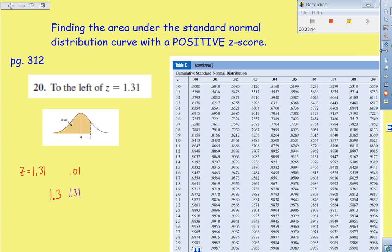Draw a line or use our ruler and go to 1.3. Mark our horizontal spot coming across. Come across to 0.01. Mark it vertically coming down. And where those two lines intersect, that is our middle piece. That is our Z-score of 1.31.